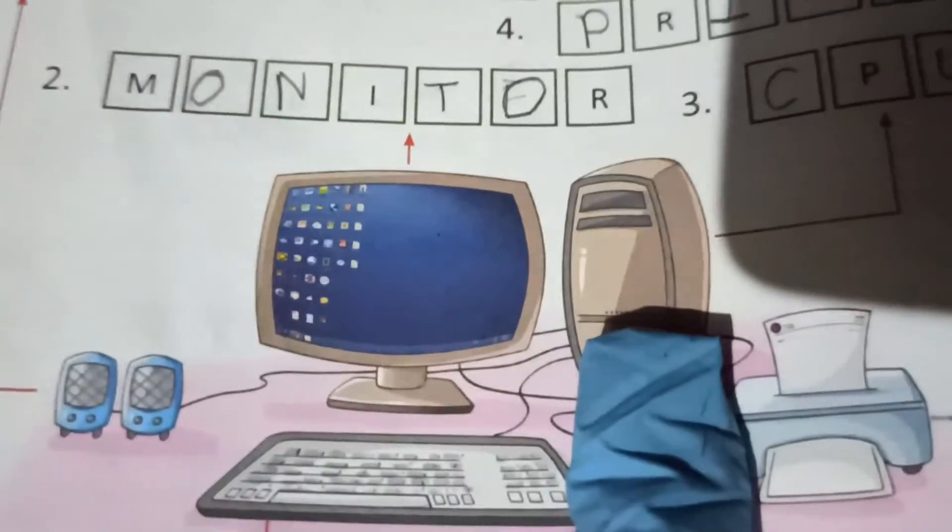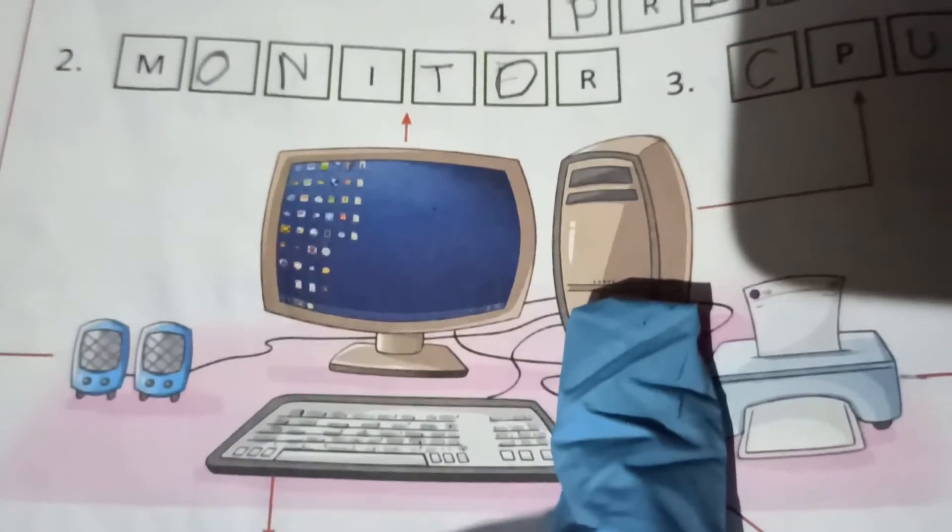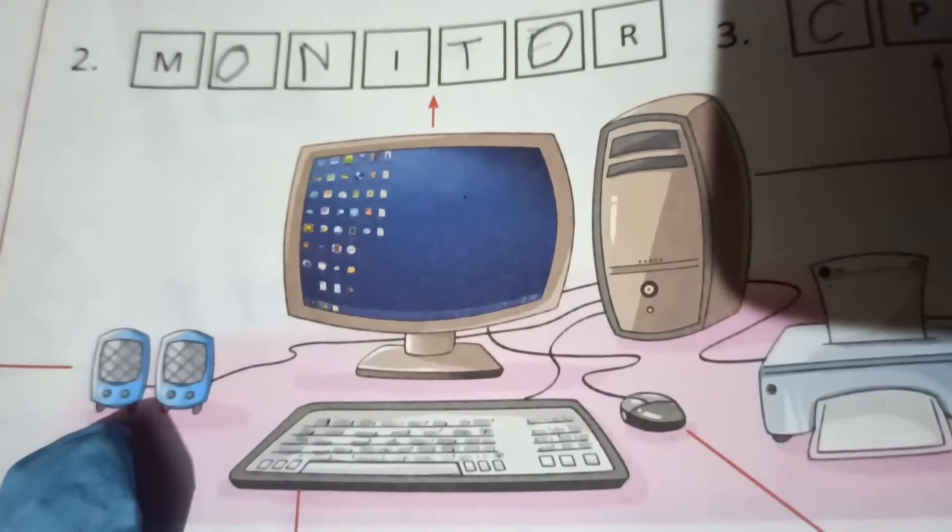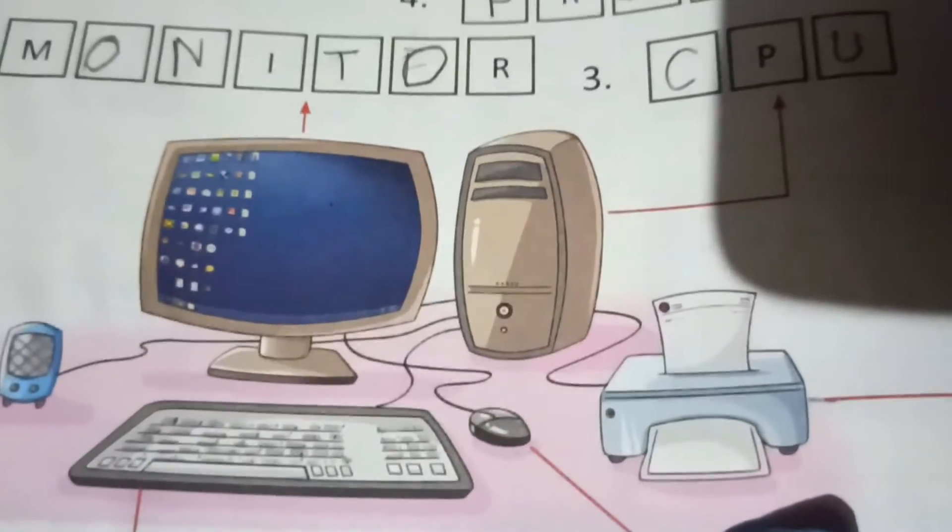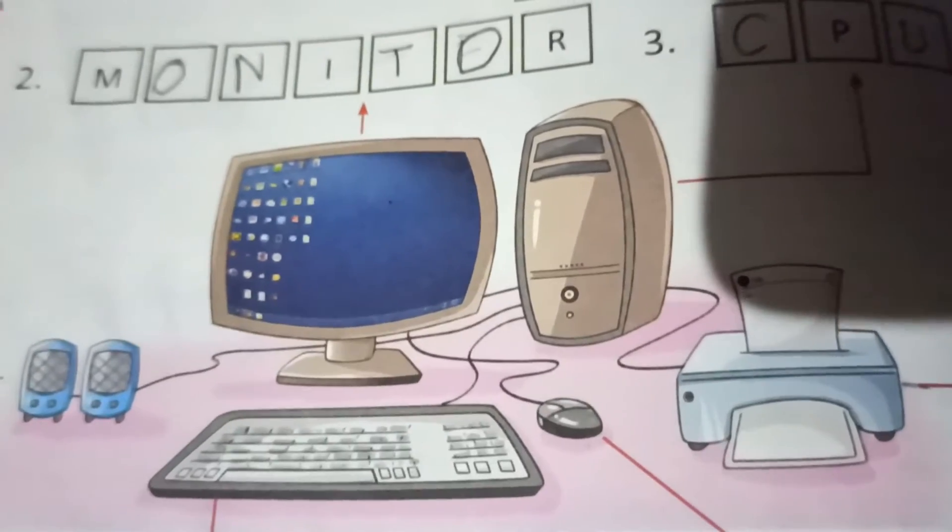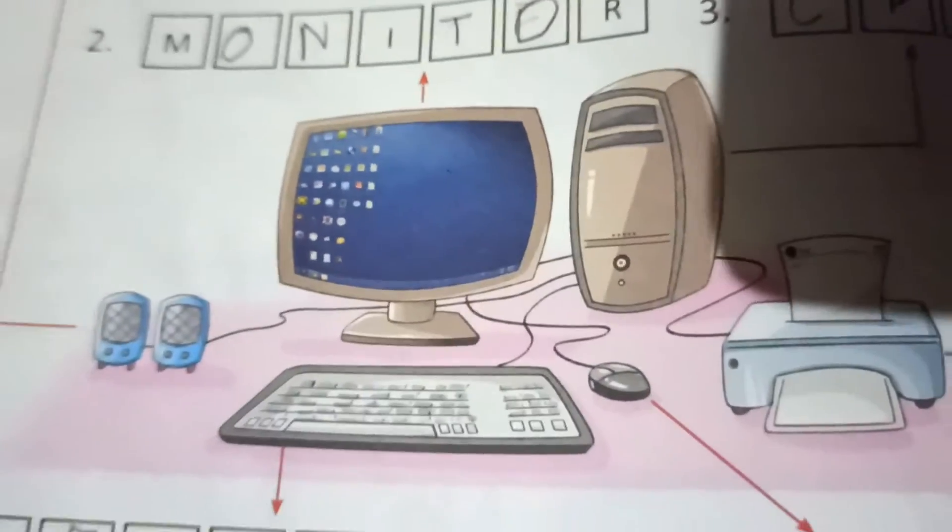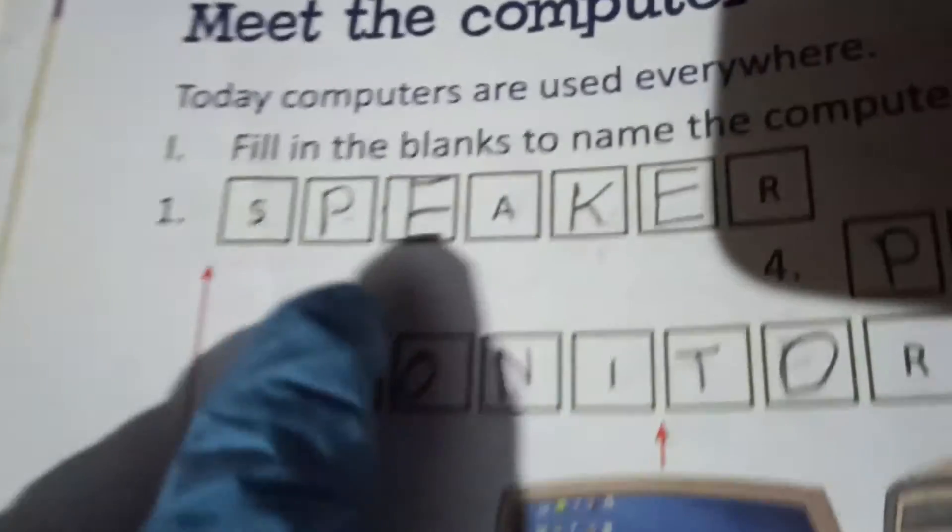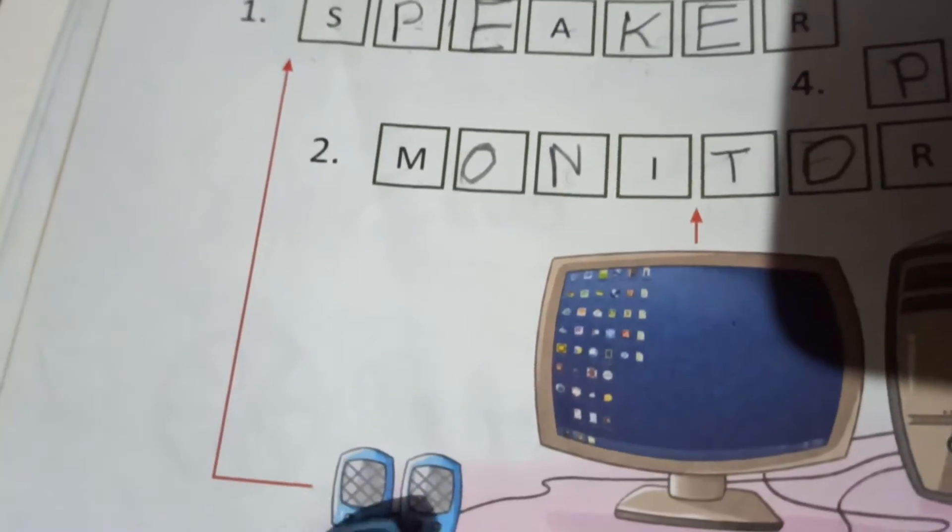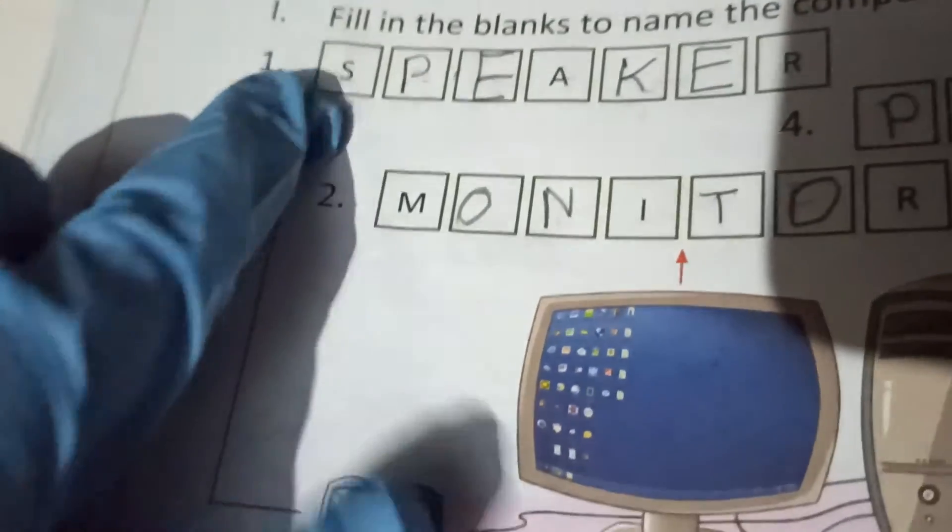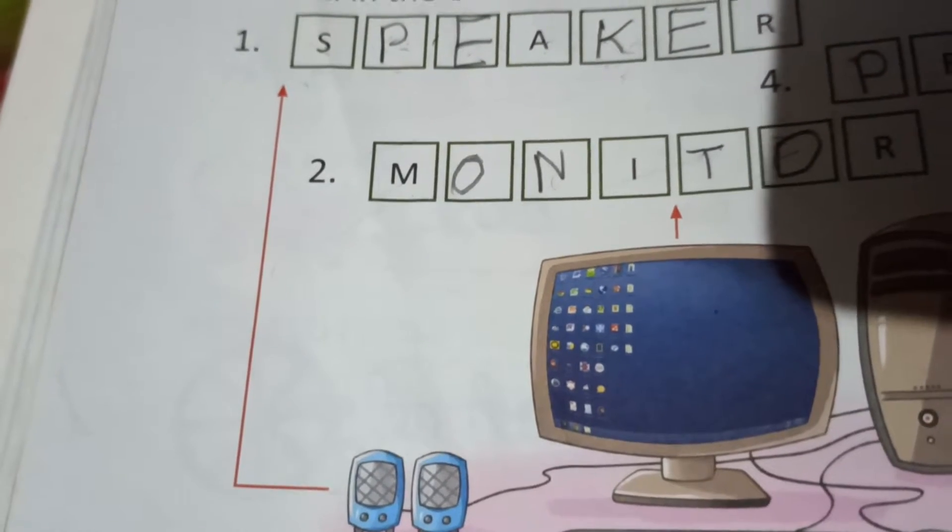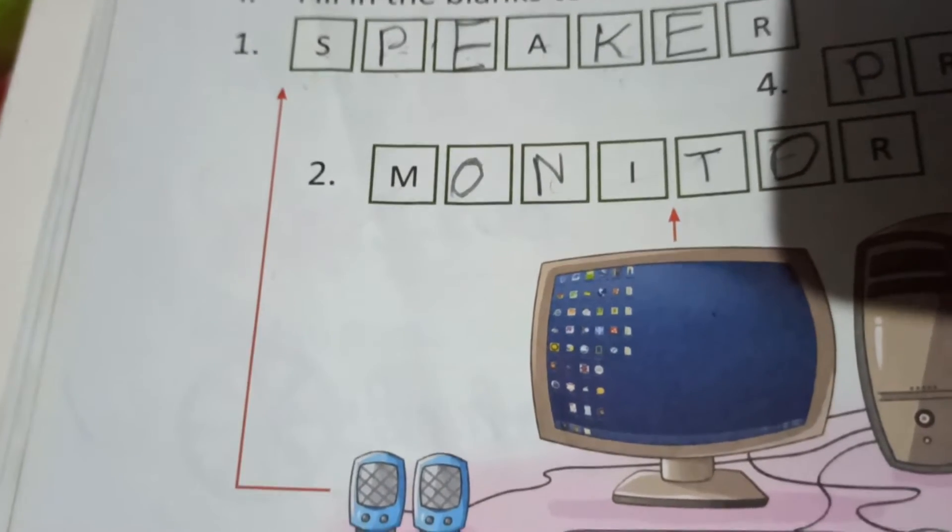This is CPU, these are speakers, and this is a printer. Okay, now one by one write down the spellings. Look here, the first one, the arrow is coming from this side.